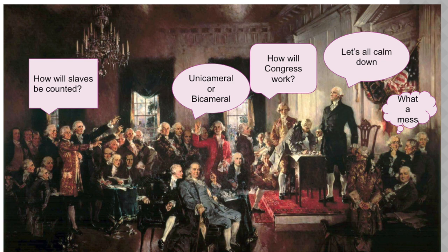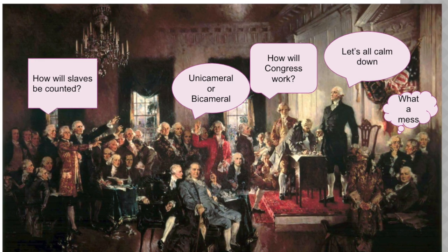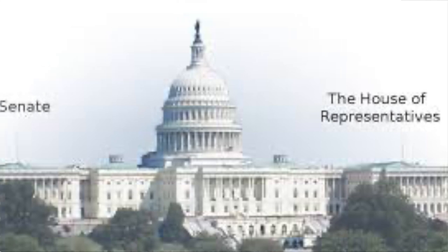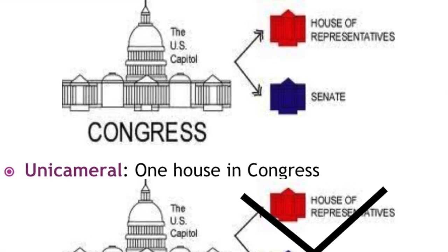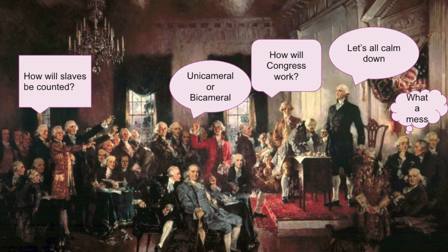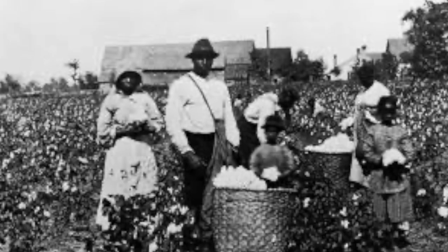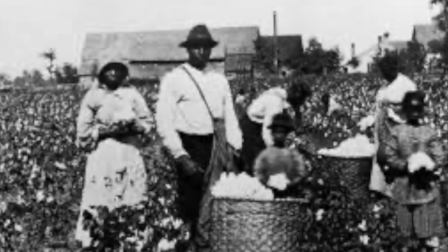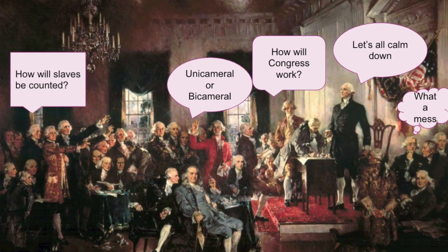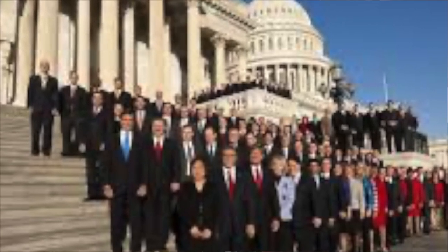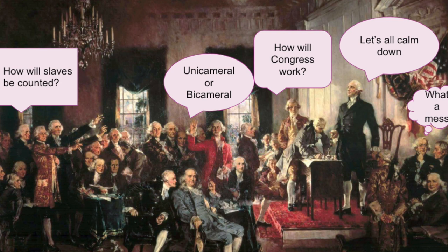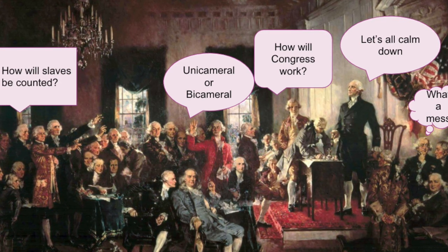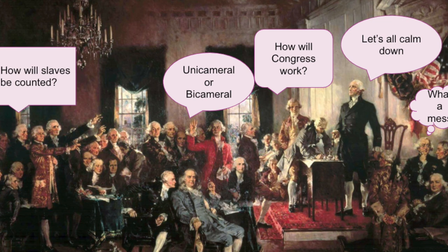At this meeting, there's going to be a lot of arguments and debate. Some of these arguments and debates will be over Congress and representatives — how many states get how many representatives? Should it be unicameral or bicameral? Should Congress be divided or not? Another issue will be slaves: will states that have slaves be able to count their slaves towards their population to have more representatives? But at the end of the day, there's going to be compromise, and George Washington is here presiding as president of the Constitutional Convention.